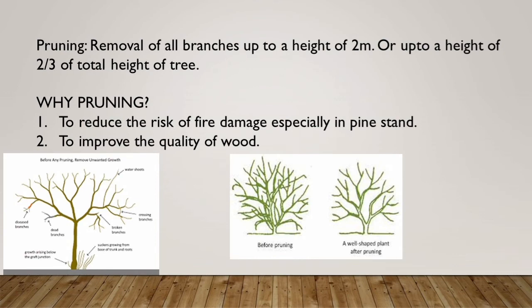Now we will know about pruning. Pruning is the removal of all branches up to a height of two meters, or up to two-thirds of the total height of the tree. Pruning is important to reduce the risk of fire damage, especially in pine stands, and to improve the quality of wood. Pruning removes dead and dying branches, allowing space for new growth, and promotes the plant's natural shape and healthy growth.